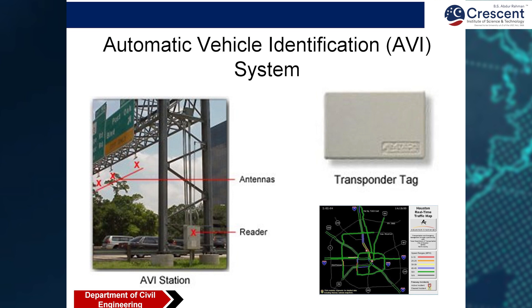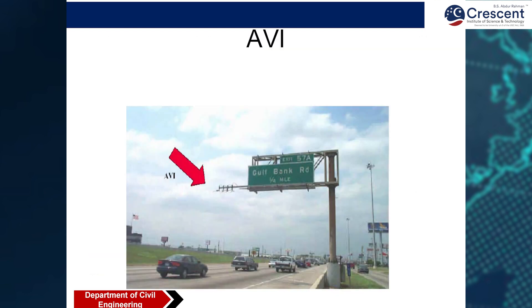This is the Automatic Vehicle Identification (AVI) system. You paste a transponder tag on your vehicle, and there is a tag reader at every toll station that reads your vehicle. Currently it is used for toll collection in our state, but in many countries it is used for automatic vehicle identification — identifying vehicles moving in various directions, such as on national highways.